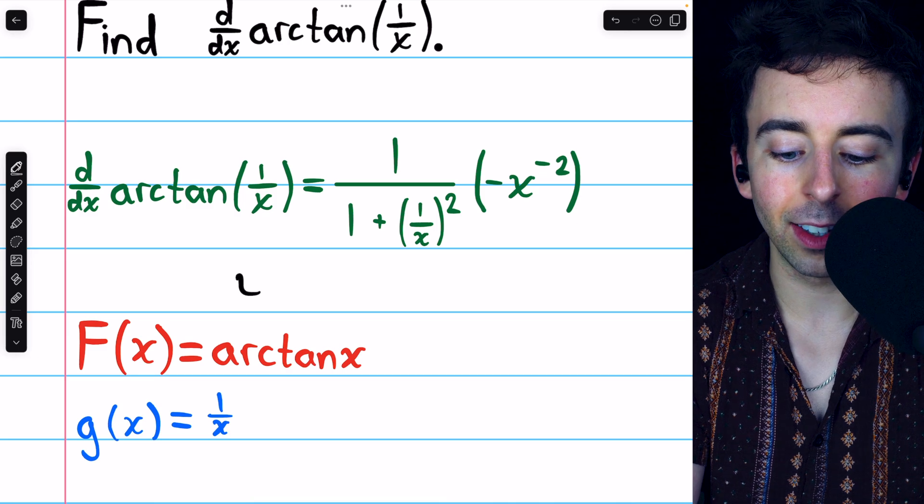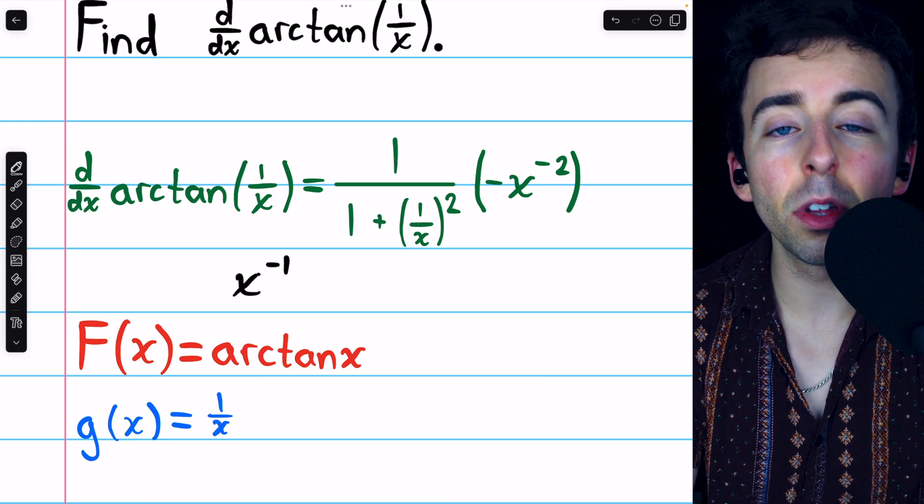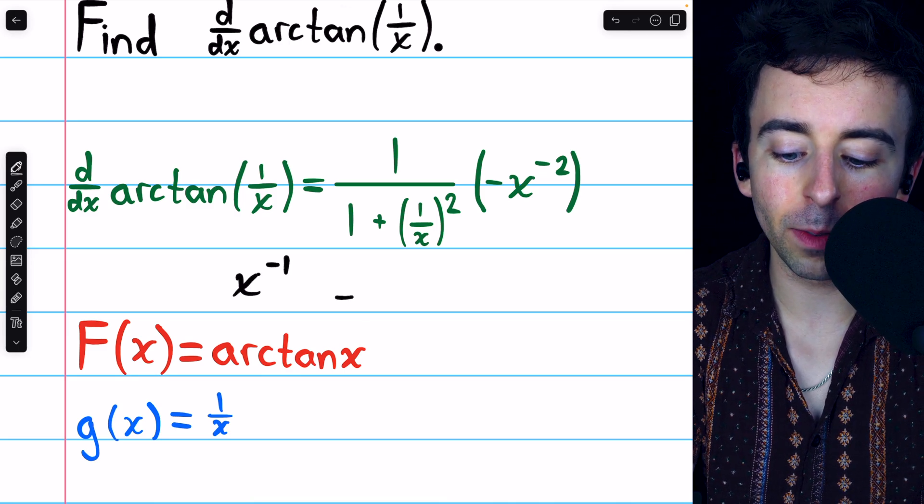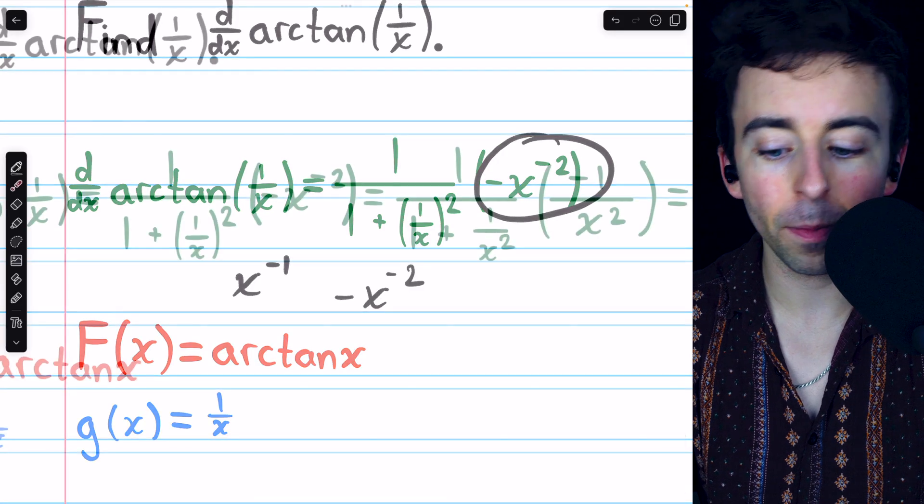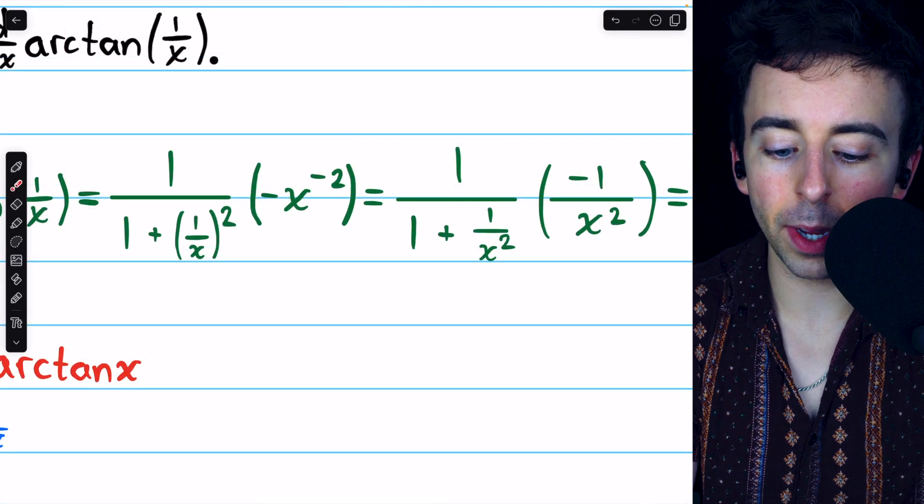Remember that 1 over x is x to the negative 1, so the derivative of that inside function is negative x to the negative 2, and that's what we see there. We can simplify this a little bit.